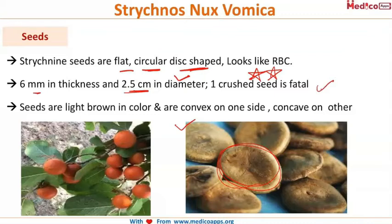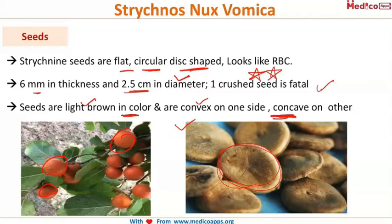These are the orange colored fruits. The seeds are light brown in color, concave on one side and convex on the other side. They resemble the RPC but are convex on one side and concave on the other.